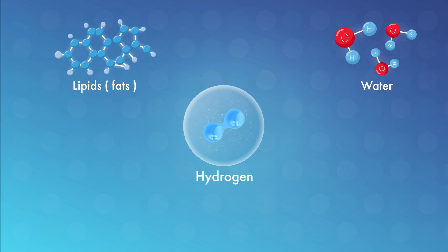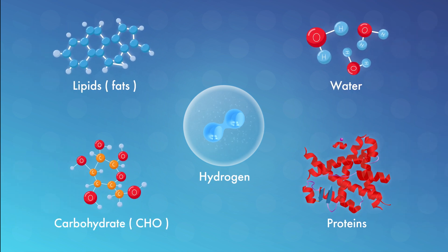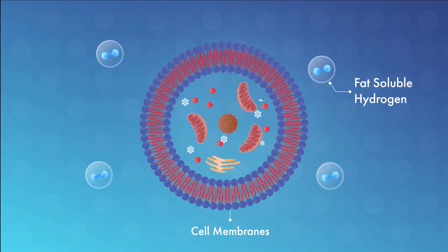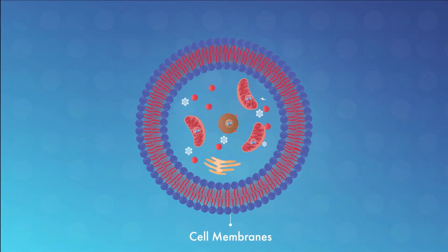And while other nutrients have antioxidant properties, hydrogen is different. Hydrogen is fat soluble, allowing it to diffuse through the fatty cell membranes, entering cells where it's needed.